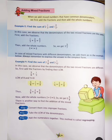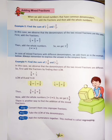You can see here 3 upon 7. Now add the whole numbers. The whole numbers are 2 and 1, so 2 plus 1 is equal to 3. So we get the answer 3 and 3 upon 7.